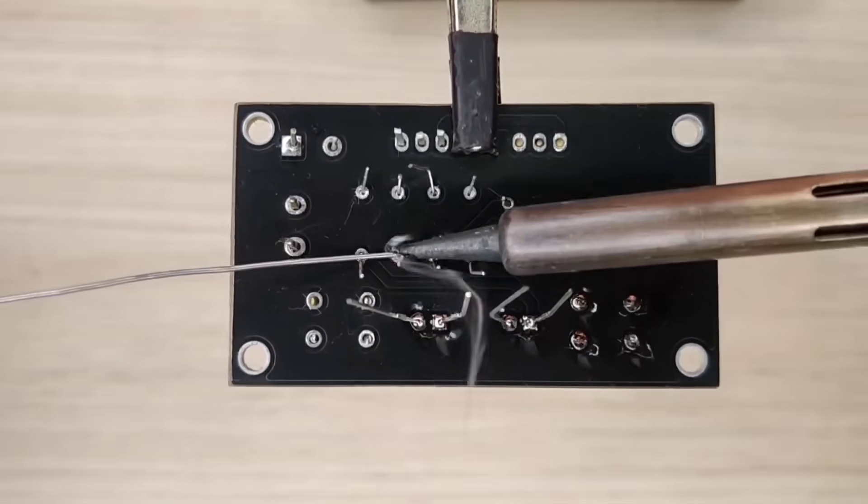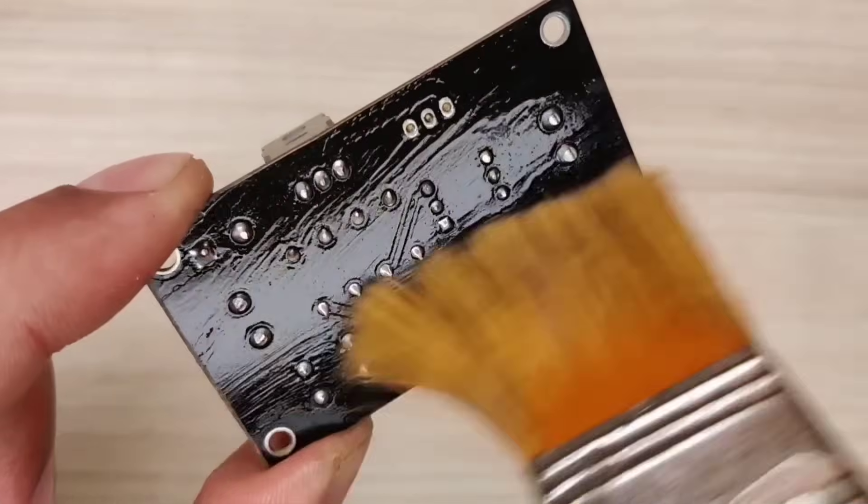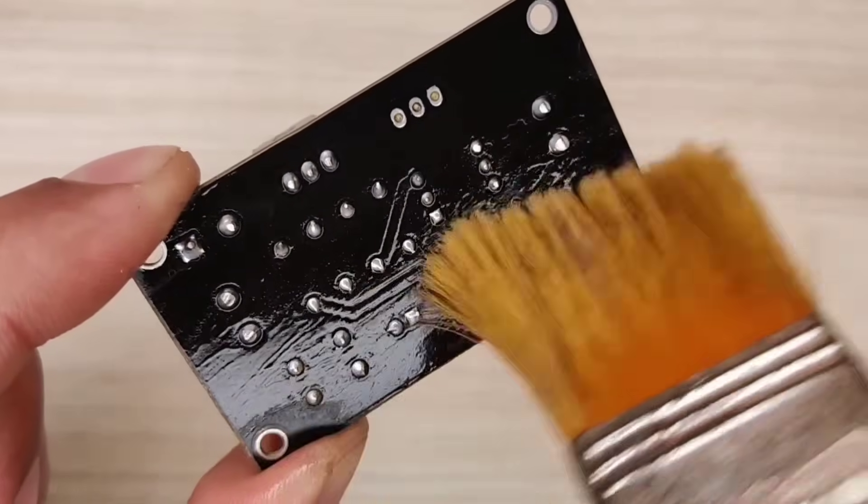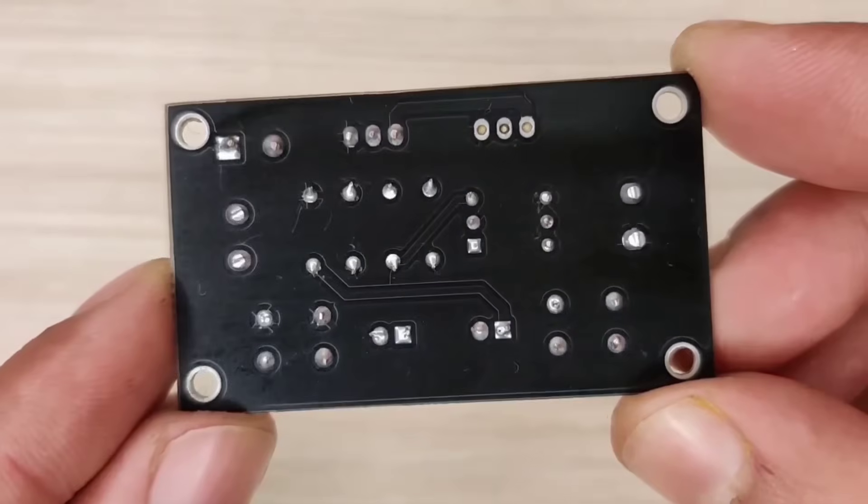And after spending some time with the soldering process, I clean the PCB with isopropyl alcohol. And here our PCB is looking nice and clean.